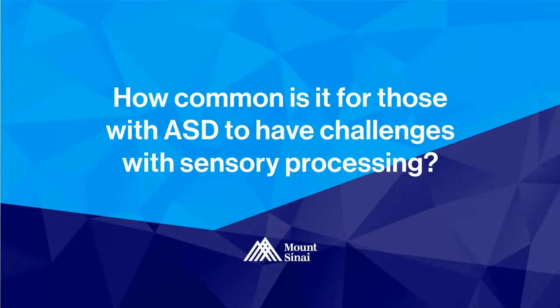Sensory reactivity differences are reported in up to 90% of individuals on the spectrum, and depending on the study and the way these features are measured, we have seen up to 96% in certain studies. So while there is a range, the majority of individuals with autism do show sensory reactivity differences. But it is important to recognize that sensory features in the DSM are part of what we call the B domain, or the repetitive and restricted interest domain, where two of four features have to be met — so an individual does not have to have sensory reactivity differences to have autism.